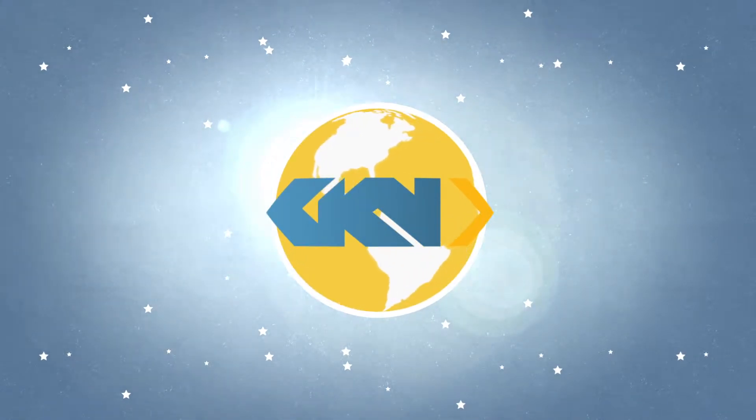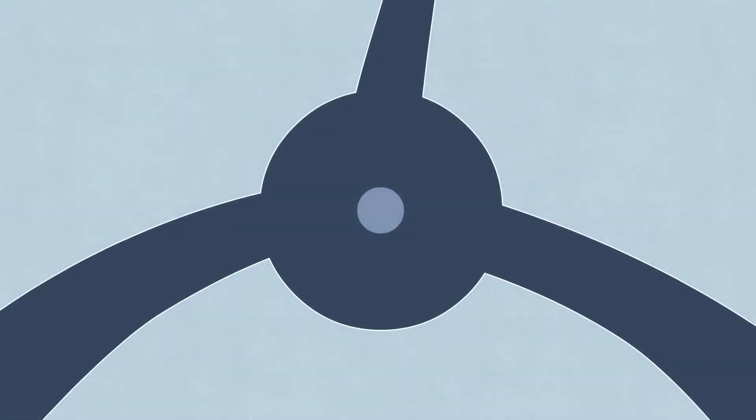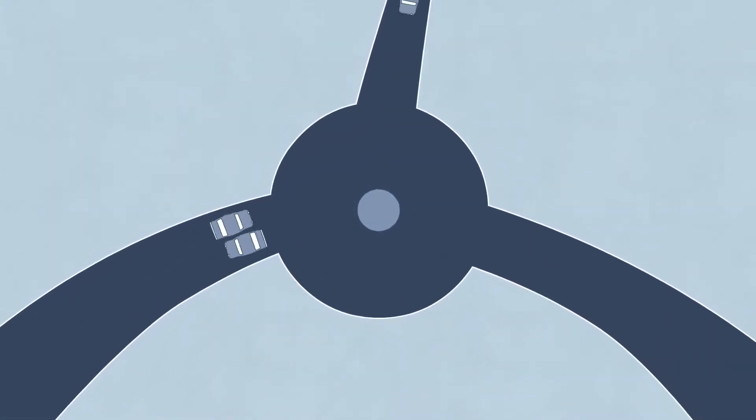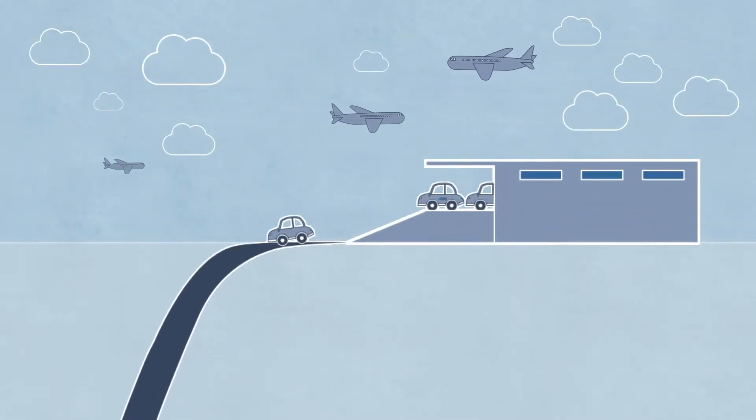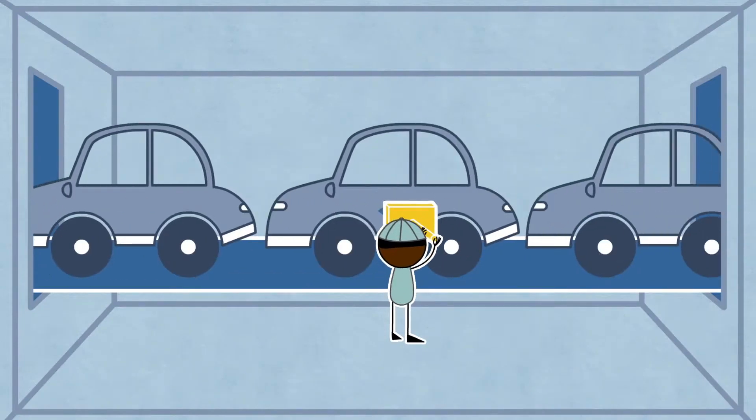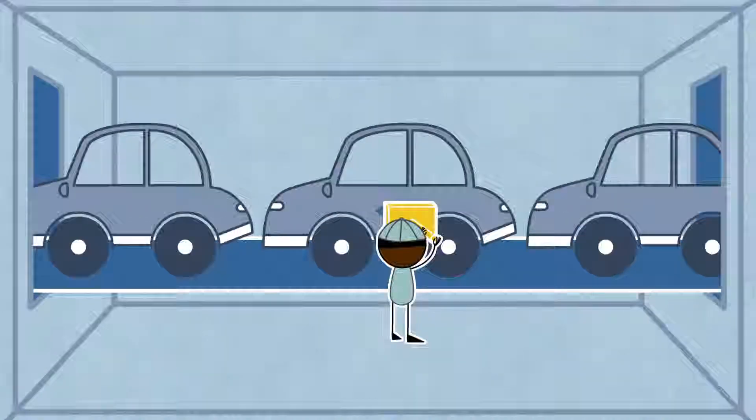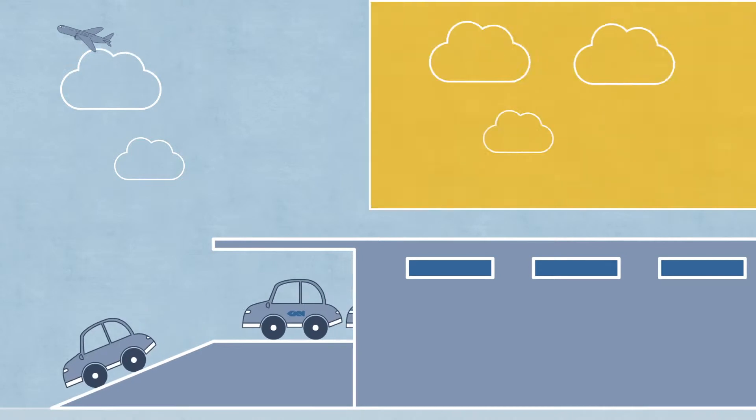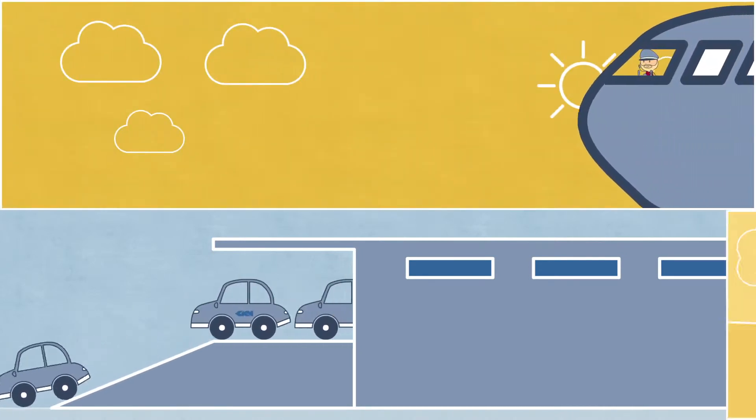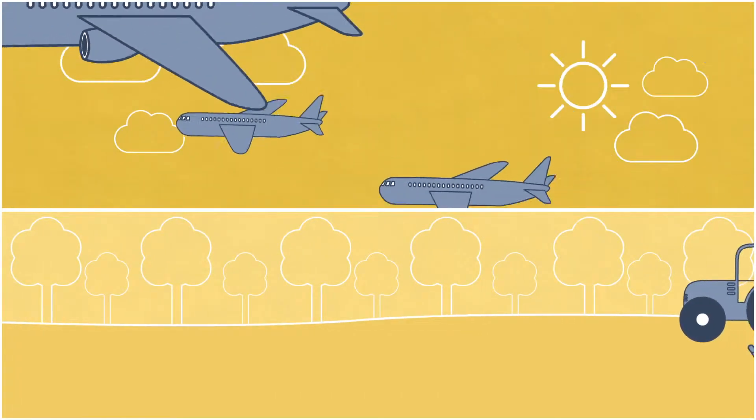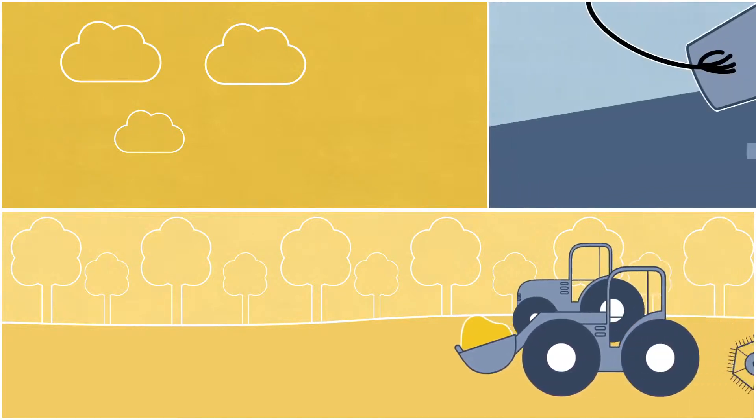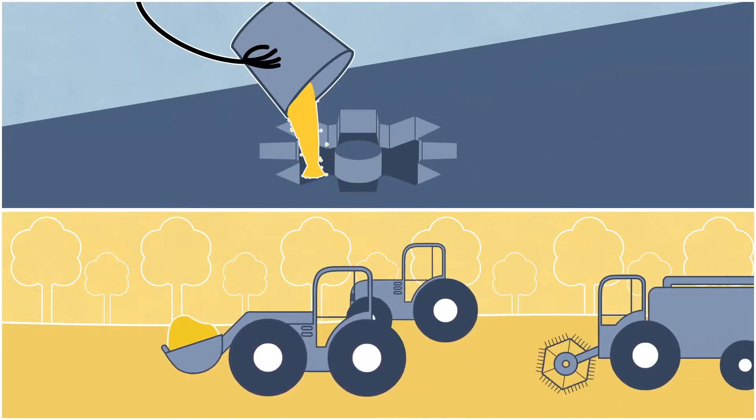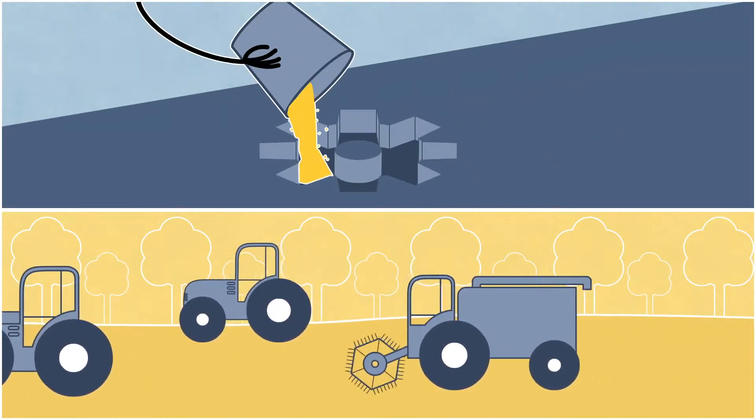For more than 250 years, GKN has been moving the world. Every day, we drive the wheels of hundreds of millions of cars, help thousands of aircraft to fly, deliver power to move earth and harvest crops, and make essential components for industries that touch lives across the globe.